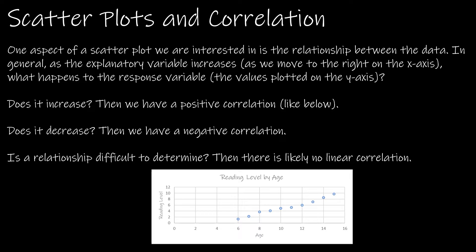At the bottom of the page, I have created a scatter plot of the data we just looked at in table form. It's important to understand how the scatter plot is made: on the x-axis, we're always going to put the explanatory variable, and on the y-axis, we're always going to put the response variable. Each of these dots then represents one pair of data.